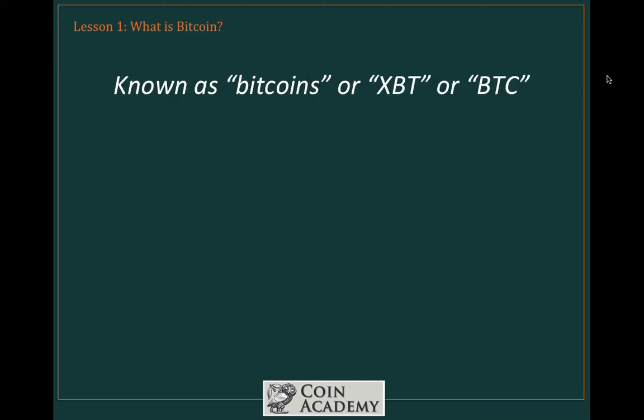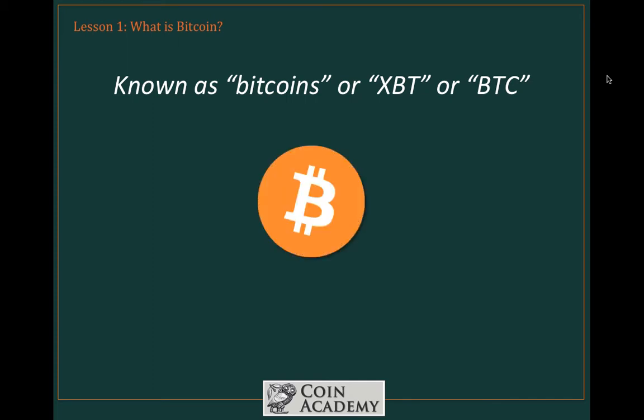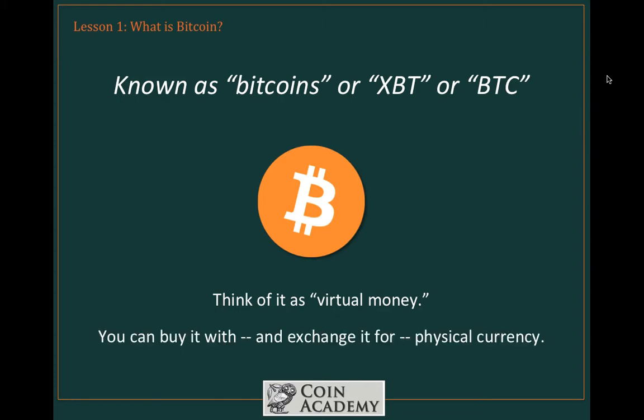The currency units are known as Bitcoins. "Bitcoin," the singular, refers to the entire system. In terms of currency symbols, on Forex exchanges you'll see it represented as XBT. In articles about Bitcoin or outside Forex exchanges, it's often represented as BTC. You'll also see a specific symbol and variations of it that mean Bitcoin. To put all this in a nutshell: it's virtual money, and the beauty of it is that you can buy things with it and exchange it for physical currency.